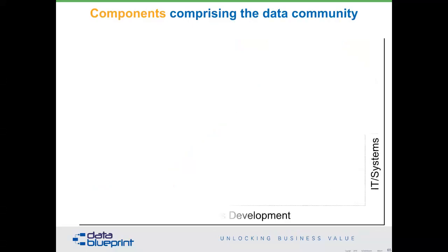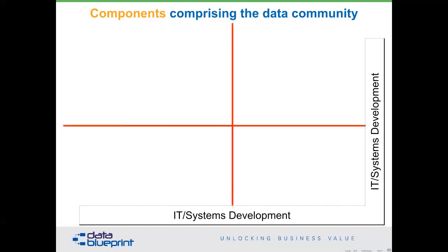Let me give you a little more context and talk about your data community in general. Yours may or may not look exactly like this, but I think the general components are recognizable. First of all, there is IT — they provide the bedrock, the foundation. In a standard four-by-four matrix: on the left-hand side of the vertical red line, the domain expertise will be less and roles are more formally defined. On the right-hand side, domain expertise is greater and roles are less formally defined.